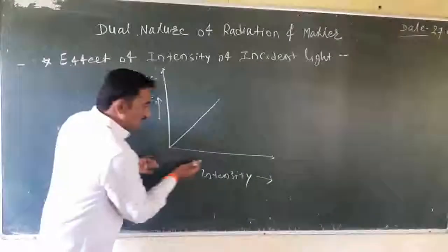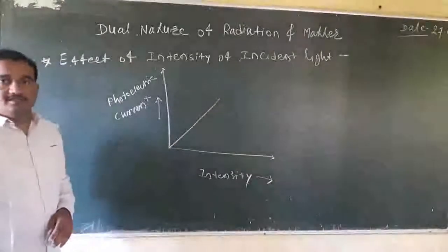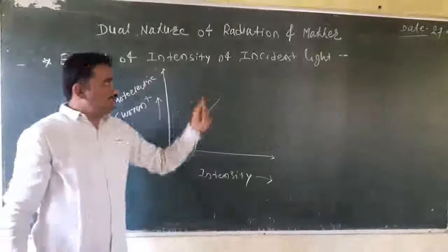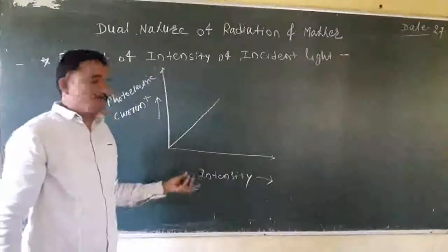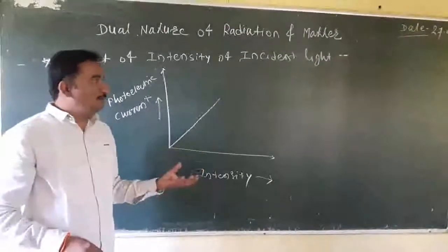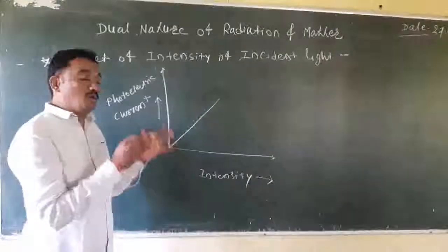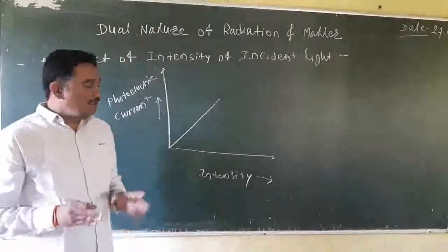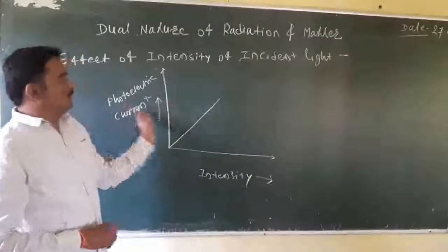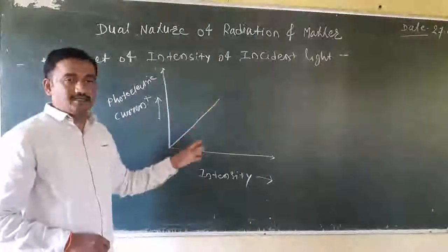In this effect of intensity of light, we generally know that more intense light consists of more number of photons. More number of photons means more number of photon-electron collisions. Therefore, as high intensity increases, photoelectric current also increases. It is a straight line graph.